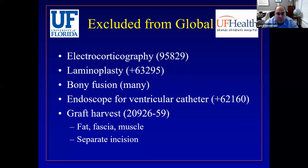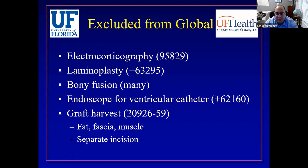Also excluded from the global: if you do electrocorticography, you can bill it separately. Laminoplasty is a code sometimes used in pediatric neurosurgery for spine and tethering operations, and has a separate code. There are many different codes for bony fusion for complex spine cases. If one uses an endoscope for ventricular catheter placement, there's an add-on code for that. Graft harvest from a separate incision — fascia, muscle from the abdomen or elsewhere — can have its own code appended.